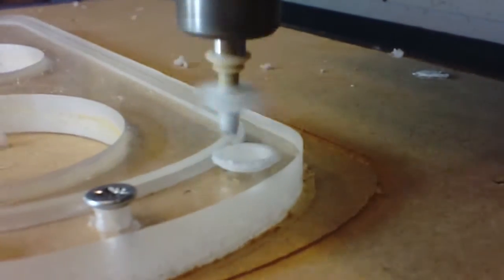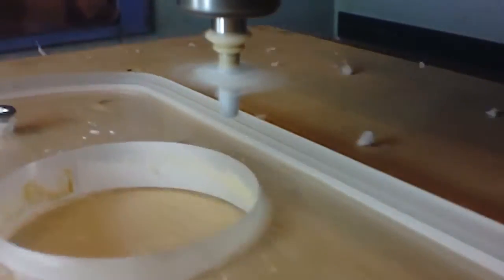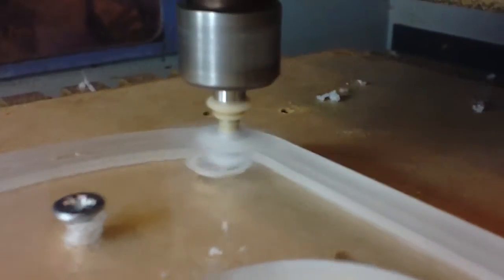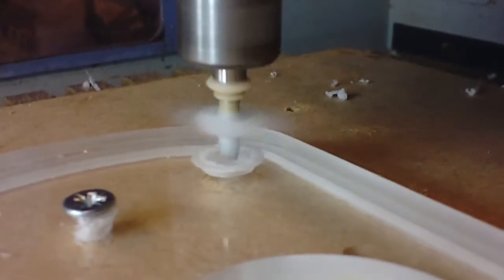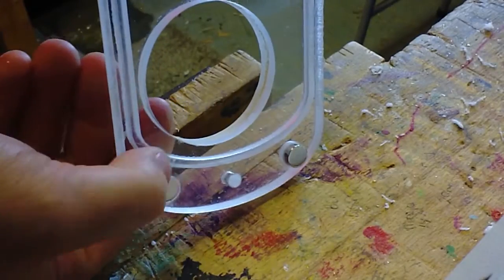You can see the router again is running a little bit too fast. Obviously this video is sped up but it's running a little bit too fast. And you can see the build up there and the melting perspex.